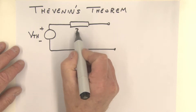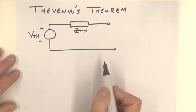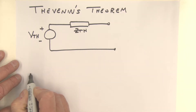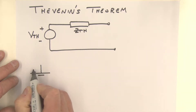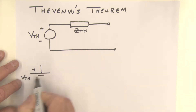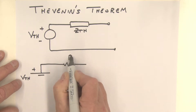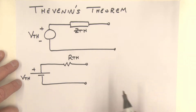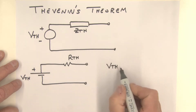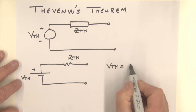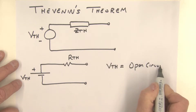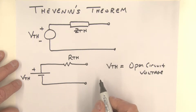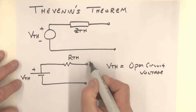This is actually called Z-Thevenin. Let's take a really simple example and look at a DC circuit case. In the sense of a DC circuit, we will have a Thevenin voltage source being a DC source in series with a Thevenin resistance, which we're going to call R-Thevenin. V-Thevenin, as we can see from this circuit, is really equal to the open circuit voltage. R-Thevenin is the resistance looking in at terminals A and B.